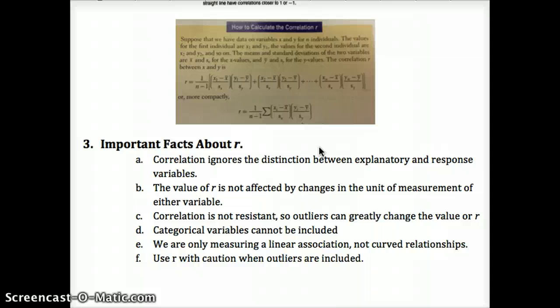You can't have categorical variables. This is one problem that a lot of people ran into looking for data for their project for chapter three. We have to have quantitative variables because we have to be able to graph both in order to calculate correlation. And then use r with caution when outliers are included. Sometimes what we might do is calculate r including the outlier and then calculate it without including the outlier. Perhaps the outlier is due to human error or something else. But maybe the outlier can tell us some useful information about something else that's going on. Maybe there's a variable we're not accounting for.